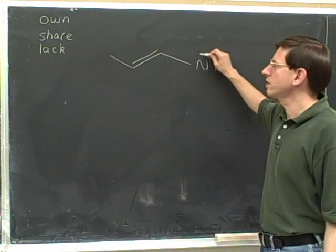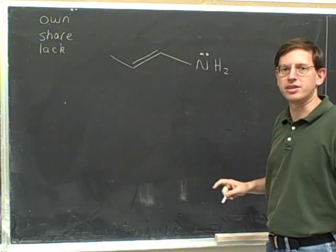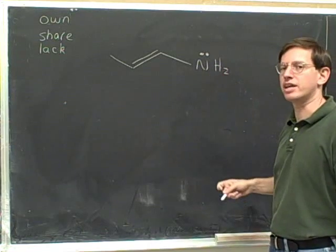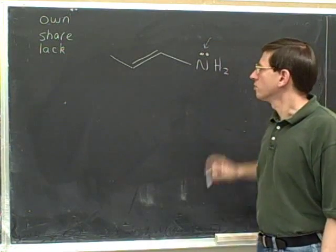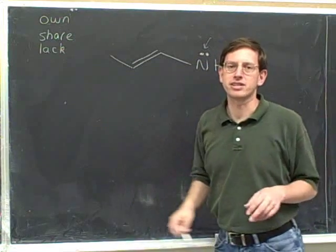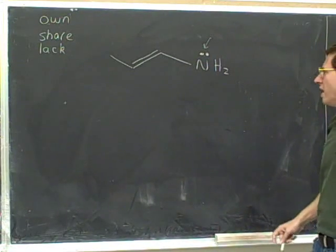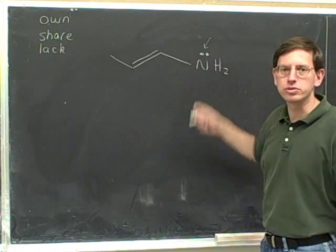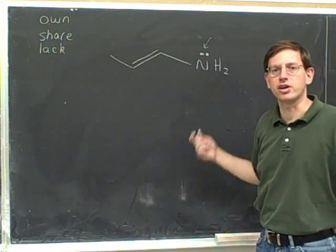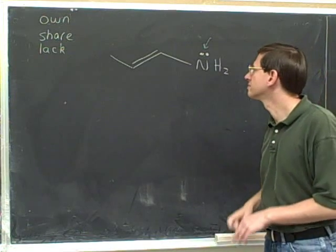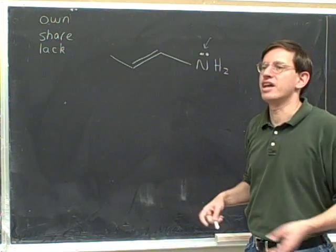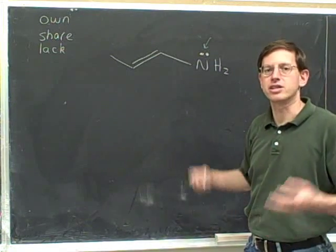I'd like to focus on this lone pair on the nitrogen. What would you say is the relationship between the nitrogen and the lone pair? Would you say that the nitrogen owns the lone pair, is sharing it, or lacks it? This nitrogen owns the lone pair — it's not sharing it with anybody else. A lone pair is never shared; a lone pair is owned.